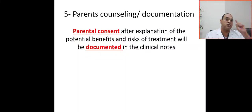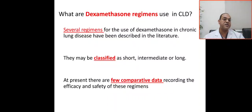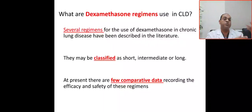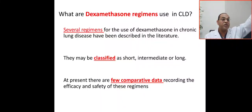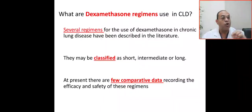Not written, not done. What are the Dexamethasone regimens used in chronic lung disease? Several regimens for use of Dexamethasone in chronic lung disease have been described in the literature. They may be classified as short — maybe three days — or intermediate, seven to ten days, or long. Previously, Dexamethasone was used for 42 days. Now at present, there are few comparative data regarding the efficacy and safety of these regimens.